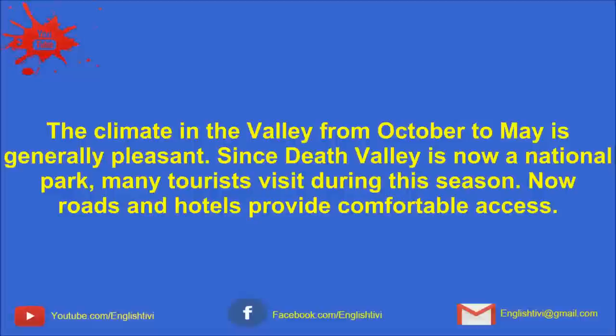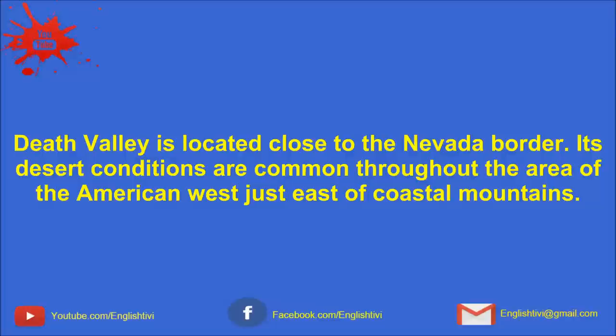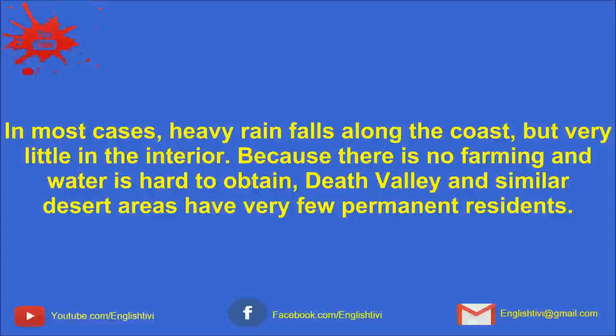The climate in the valley from October to May is generally pleasant. Since Death Valley is now a national park, many tourists visit during this season. Now roads and hotels provide comfortable access. Death Valley is located close to the Nevada border. Its desert conditions are common throughout the area of the American West, just east of the coastal mountains. In most cases, heavy rain falls along the coast, but very little in the interior. Because there is no farming and water is hard to obtain, Death Valley and similar desert areas have very few permanent residents.